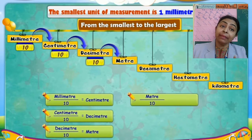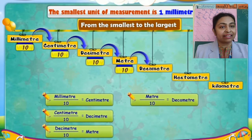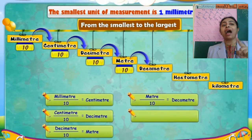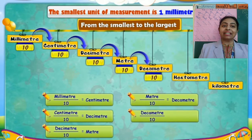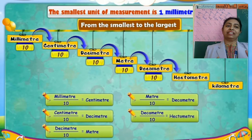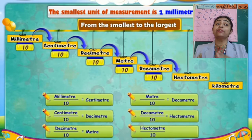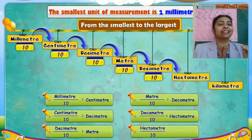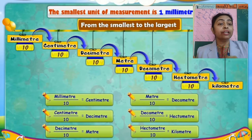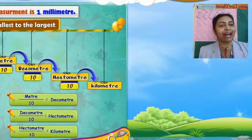From meter, if you divide by 10, you will get decameter. From decameter, if you have to do hectometer, you have to divide by 10. From hectometer, you will make it kilometer — you again divide it by 10. So from the smaller unit to the larger unit, you have to divide by 10.